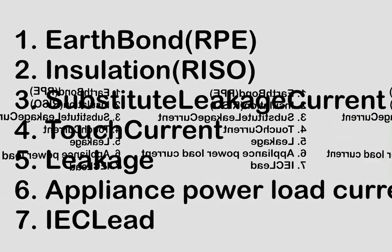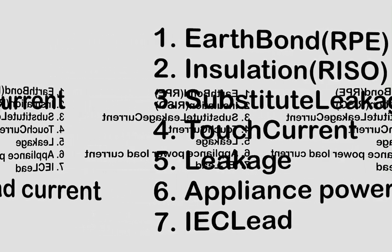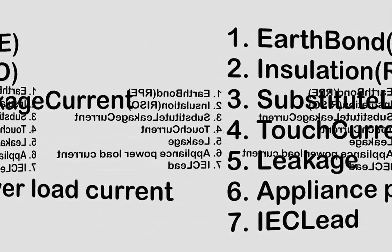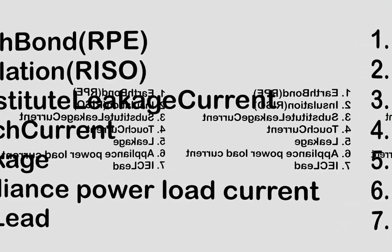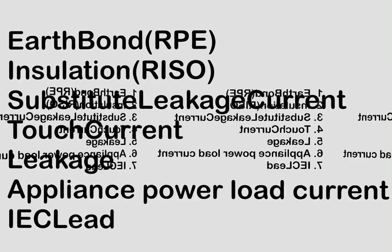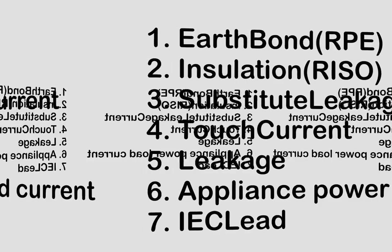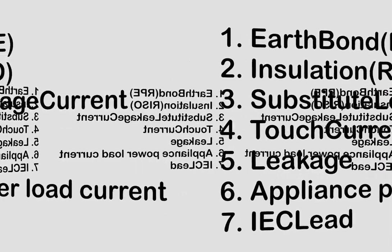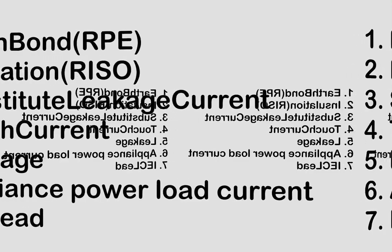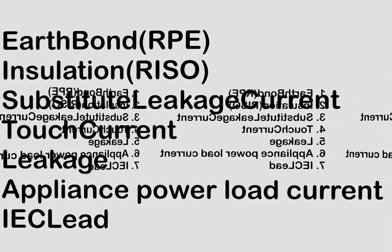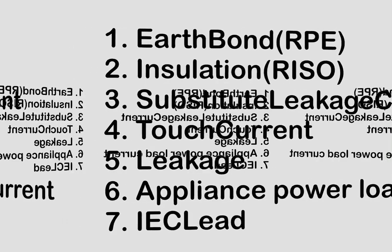Fourth, we need to carry out the touch current test. For Class 2 equipment, there is no earth, so the test lead is connected to an exposed metal part of the body to do the test. Fifth is the IEC lead test. If you have an IEC lead, it should be tested as an individual appliance and recorded and labeled accordingly. Most IEC leads are Class 1 and must have a visual inspection, earth continuity test, and insulation resistance test.